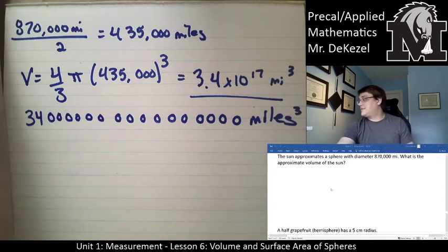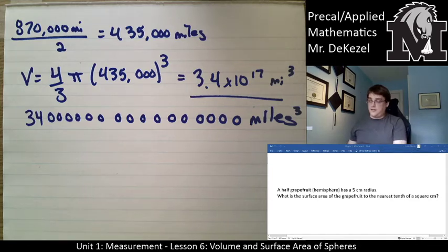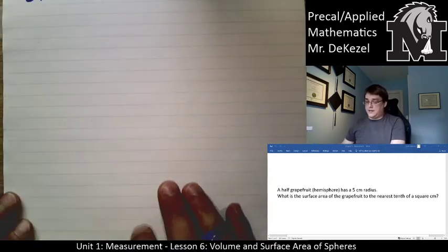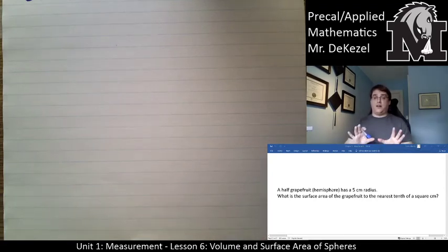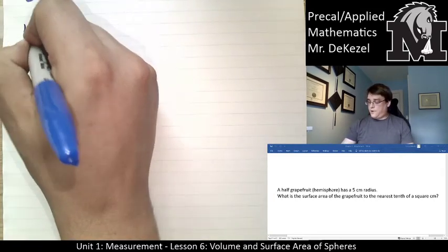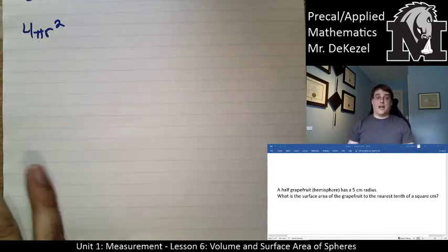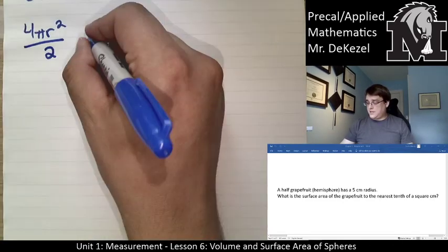Let's move on to the next problem. A half a grapefruit, this is known as a hemisphere, has a 5 centimeter radius. What is the surface area of the grapefruit to the nearest tenth of a square centimeter? So we are going to need to work out what the equation needs to be a little bit. We know that the surface area of a whole sphere is 4πr². Now if we got a hemisphere, that's just half, so we just divide that by 2.